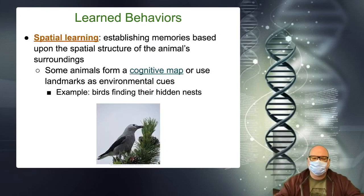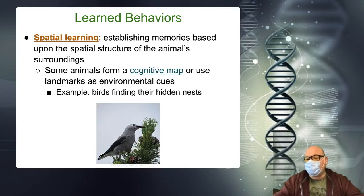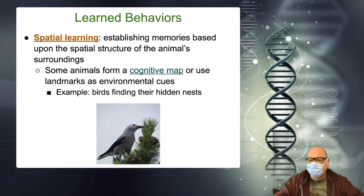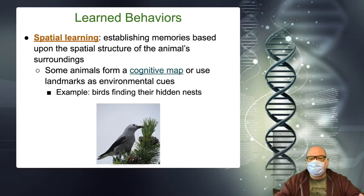Other learned behaviors: there's spatial learning — that's where something is in space. Birds can find their hidden nest. Animals that have burrows in hidden places can find their way through them in the dark. Ants do that.